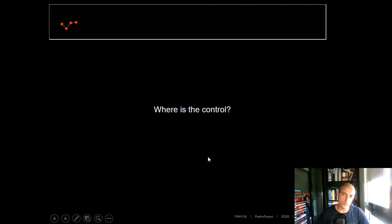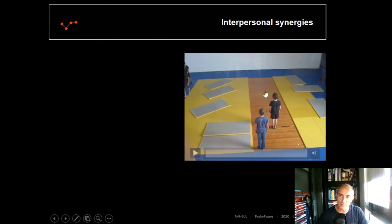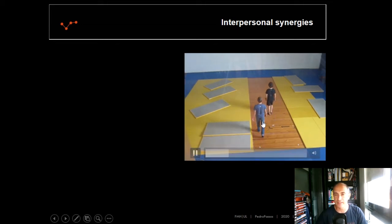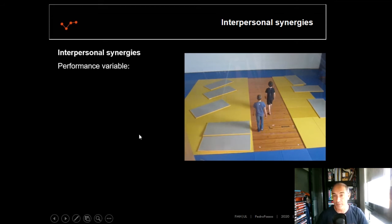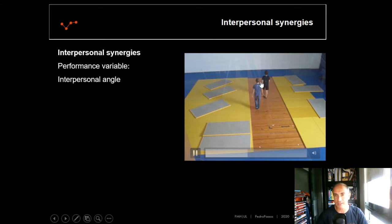And then, where is the control? When two or more players, two or more subjects, need to perform some kind of task, when they need to coordinate with the others, where is the control? So if we do a laboratory task, as this task here with two participants, they need to walk through this corridor, eight meters corridor, and the performance goal is to maintain the relative position. Well, the relative position can be captured by the interpersonal angle. So what we have here, we have a performance variable, performance goal, which is maintain the interpersonal angle from the beginning of the task until the end of the task, and we have task-relevant elements.